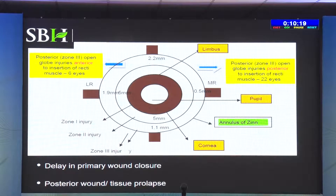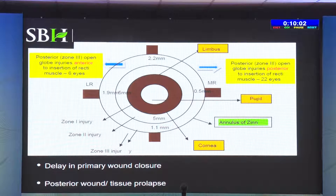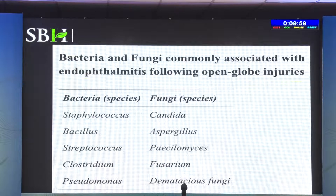Wound zones are very important. Zone 1 is up to the limbus — chances of endophthalmitis are less, although infection can still be high. Zone 2 is up to 5 millimeters and Zone 3 is beyond 5 millimeters. Anything beyond Zone 3 is not only bad for infection, but also because the retina starts beyond that, making prognosis very bad.